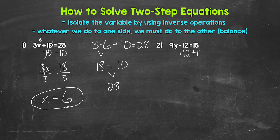Whatever we do to one side, we must do to the other, so add 12 to the right side as well. On the left side, we are subtracting 12 and adding 12, so these 12s cancel each other out. We have 9y equals, and on the right side, 15 plus 12 gives us 27. So now we have 9y equals 27.